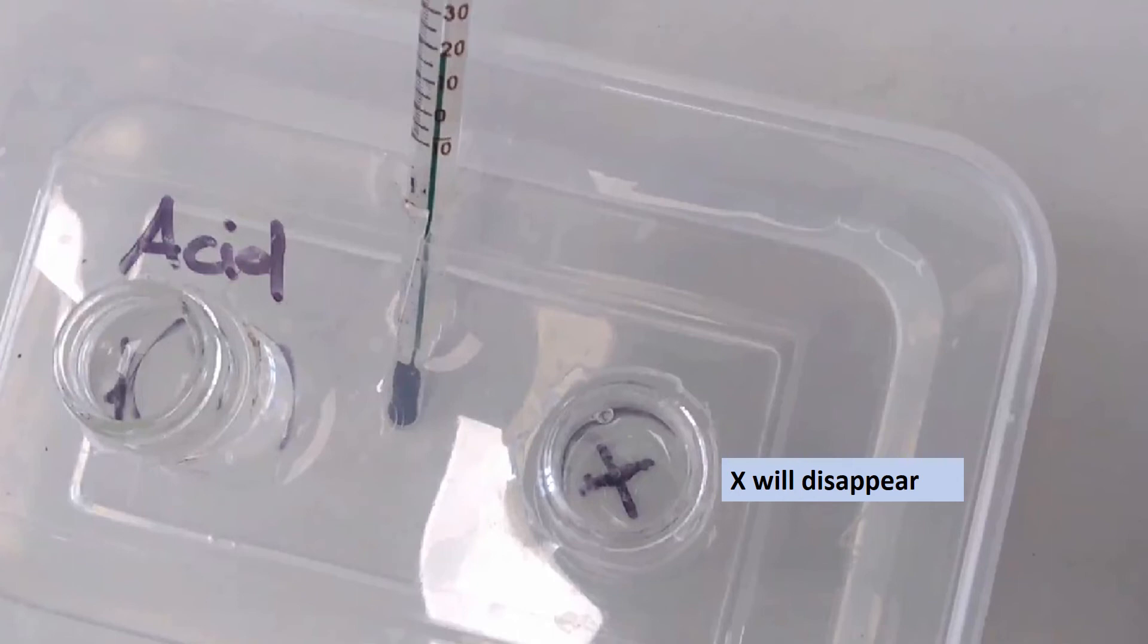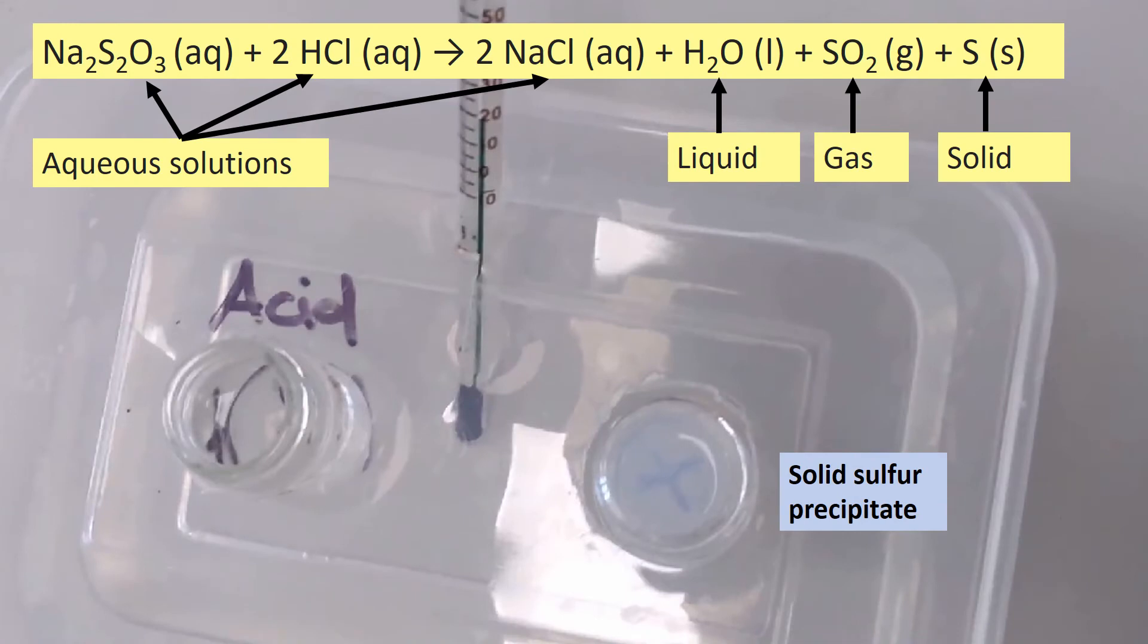Once I'm happy that my acid has reached the correct temperature, I can add a carefully controlled volume to the sodium thiosulfate. As soon as I do this, I start the stop clock so that I'm timing the length of the reaction, and then I watch from above to see when the cross is no longer visible. Of course, the cross isn't actually going anywhere. It's just being hidden from view by this solid sulfur precipitate.